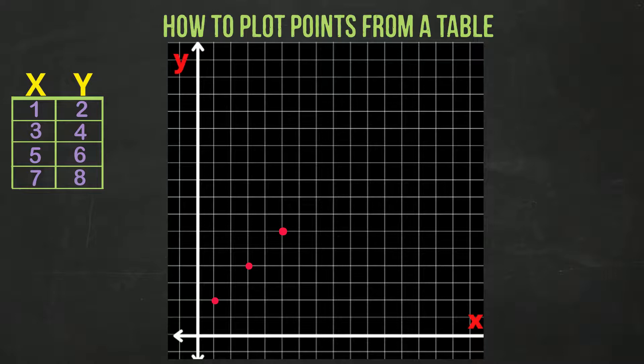Finally, last one. x is 7, y is 8. Move over 7 places to the right, move up 8 more spaces. Here's our point.